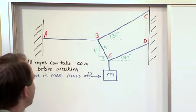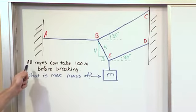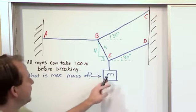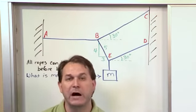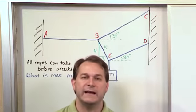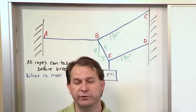So it tells us all ropes can take 100 Newtons before breaking. What is the maximum mass of this box M that's hanging there? So the critical piece of information is that all of these ropes can take 100 Newtons before snapping.